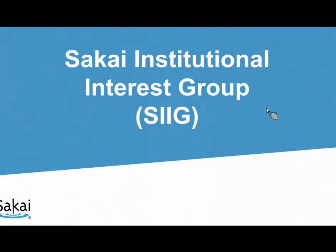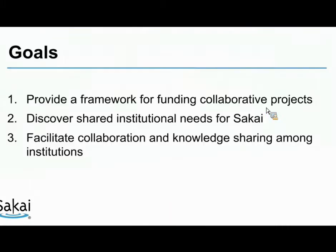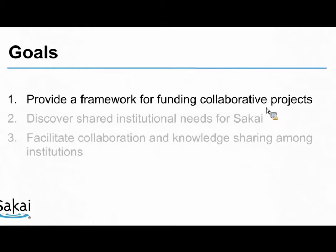The Sakai Institutional Interest Group, or SIG, formed out of conversations between Ian, Marist College, Stanford, and NYU at the Aperio Camp in Phoenix. We also had a birds-of-a-feather session at the Aperio Conference where we introduced the group and its goals. Today I want to briefly highlight our current activities and next steps. The goals are: to provide a framework for funding collaborative projects; to discover shared institutional needs for Sakai; and to facilitate collaboration and knowledge sharing among institutions.